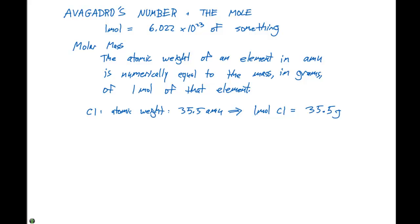We can say the same thing for a gold atom. The atomic weight of gold is 197 atomic mass units. This tells us that one mole of gold is going to be equal to 197 grams.